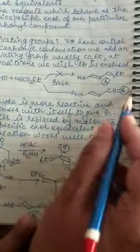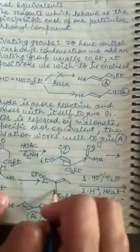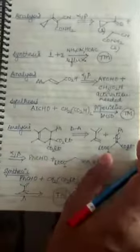Otherwise we will not be getting the A. We will be getting the product B. So just by using an activating group and specific enol equivalent our desired product is formed. Now here are the few examples of the disconnection analysis.